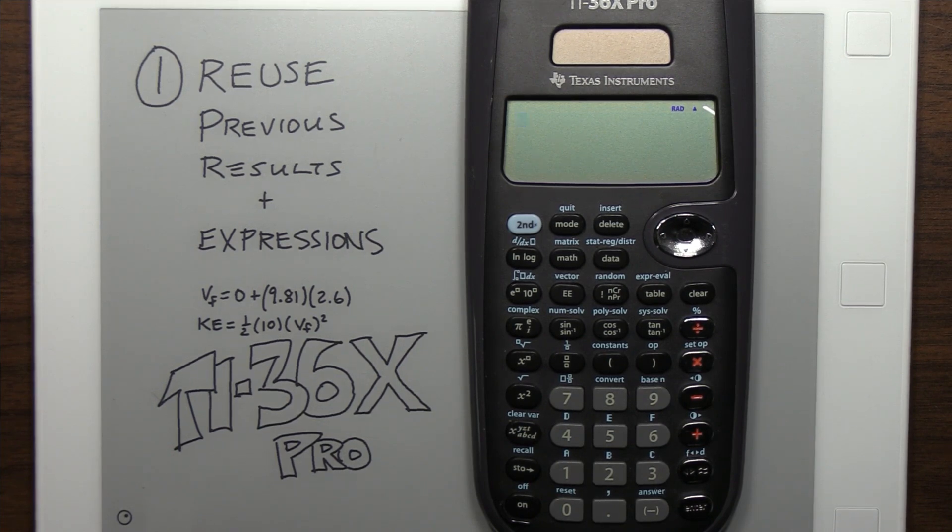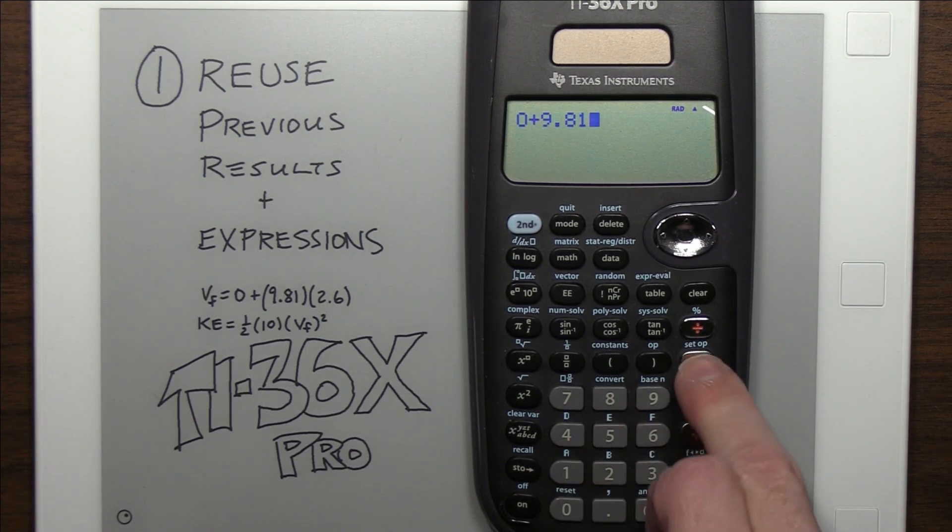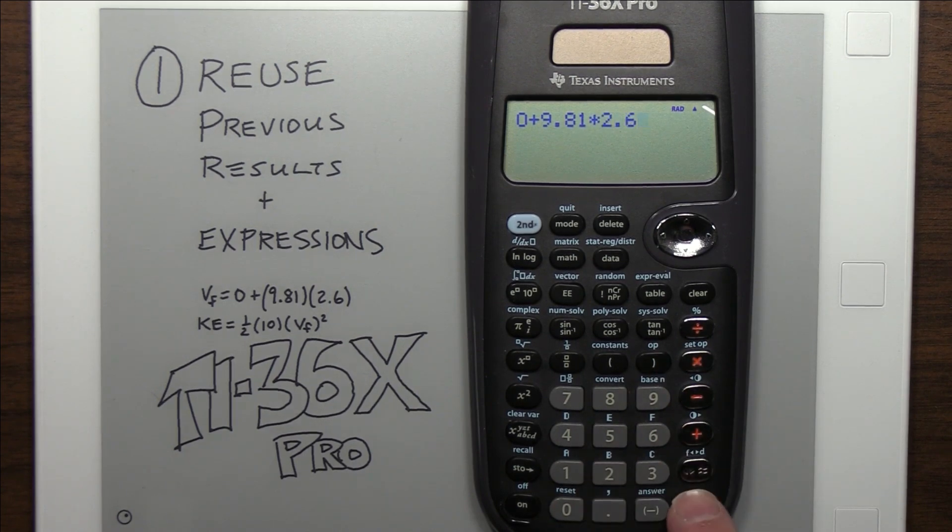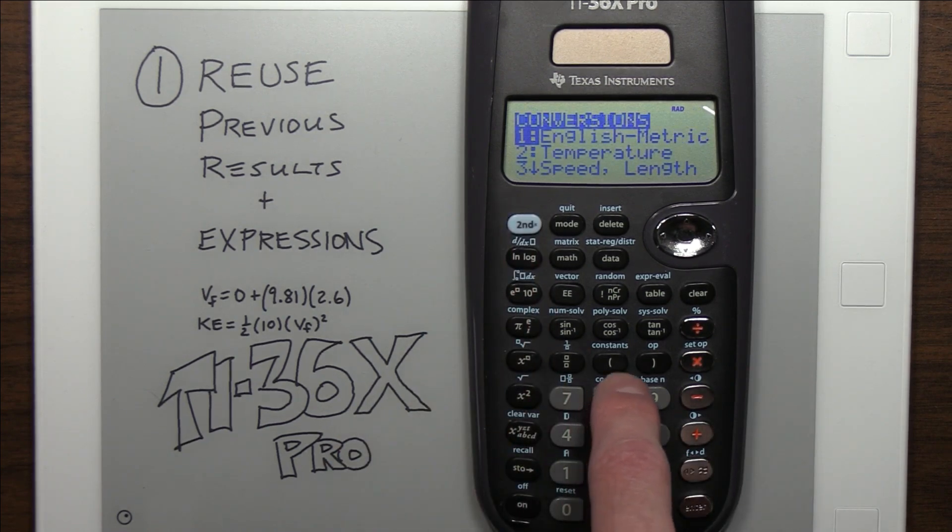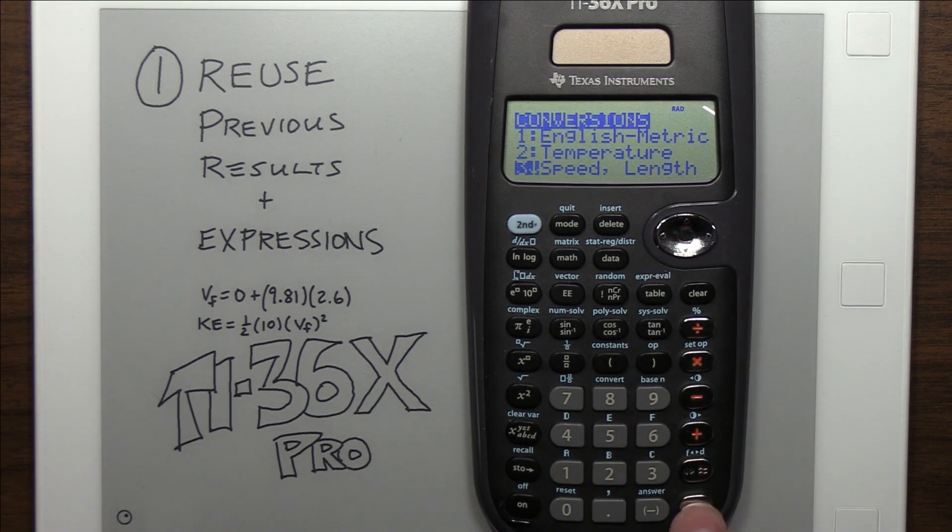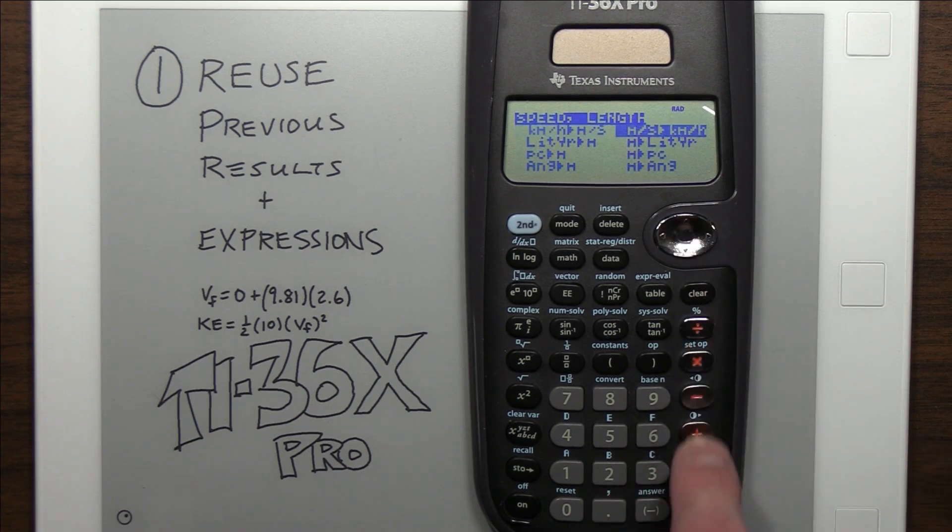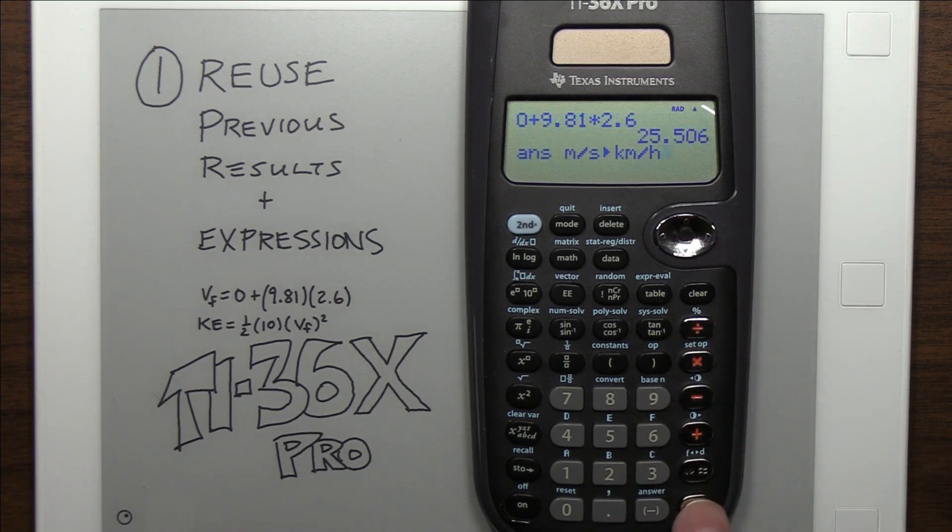And then I'm going to do the flip-flop. With the TI-36X Pro, it's really good about allowing the user to reuse previous results and expressions. For example, just a contrived example here: 0 plus 9.81 times 2.6, just using a quick equation to find my final velocity. And let's say for some reason they had asked me to express this in kilometers per hour. So I could go to my conversion menu, go to speed, go over here and pick kilometers per hour.